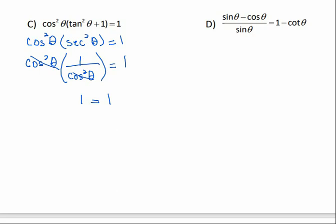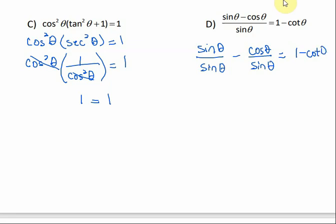In part d, one strategy when we have a complex fraction is to separate it into two separate fractions. We have sine of theta minus cosine of theta over sine of theta, which is the more complicated side. Separating it gives sine of theta over sine of theta minus cosine of theta over sine of theta. Sine over sine is 1, and cosine over sine is cotangent of theta, so the two sides are now equal.